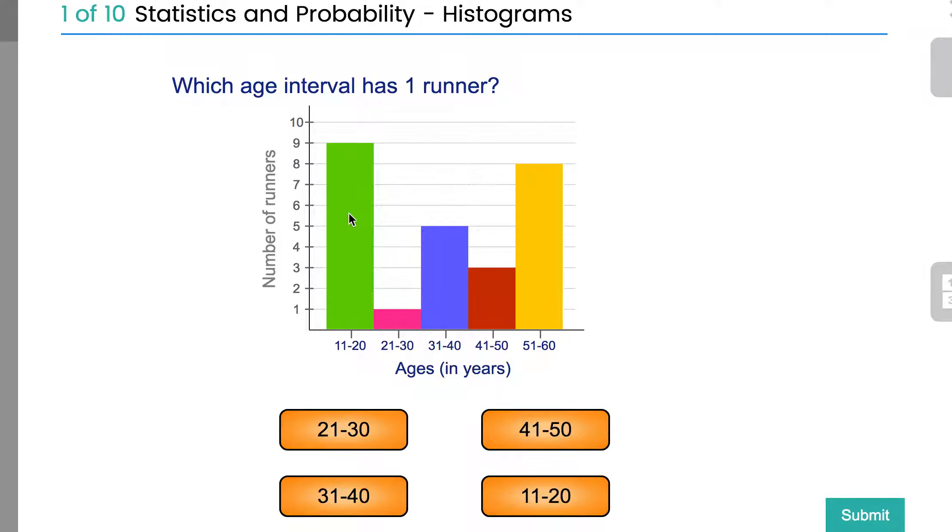In this case, we need to find the one that has one runner. So this is this interval here. These are called intervals or ranges, so it's across a number of years rather than just being a specific one year.